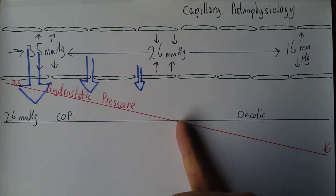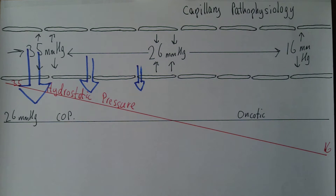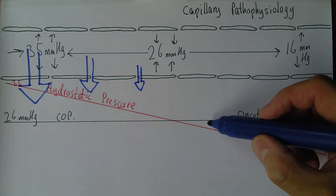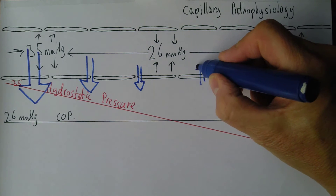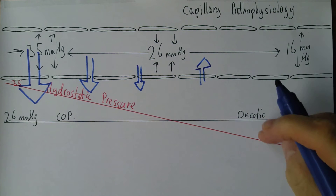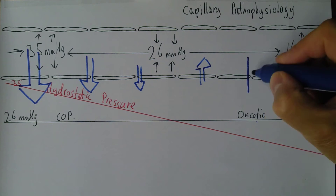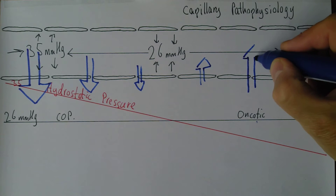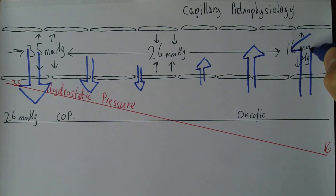When we get to the venous end of the capillary, the hydrostatic pressure is lower, so the osmotic or oncotic pressure is now greater — we get a little bit going back in. Further along, the pressure difference is greater still, so we get more reabsorption. That's what happens in the normal situation.